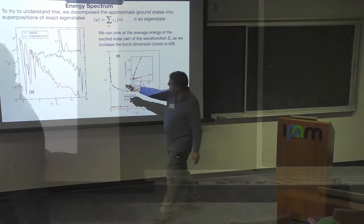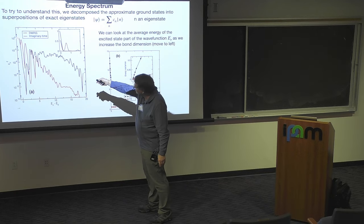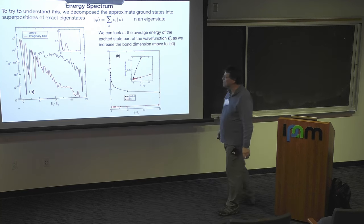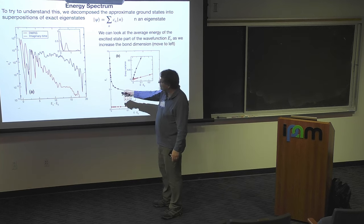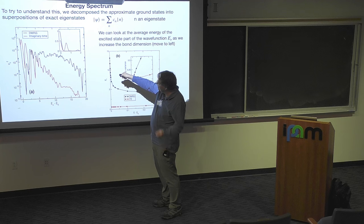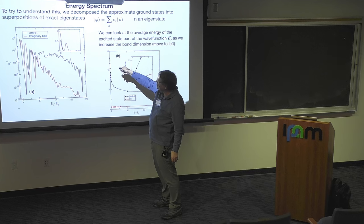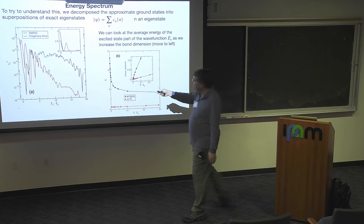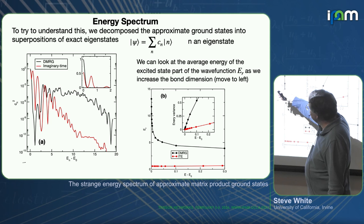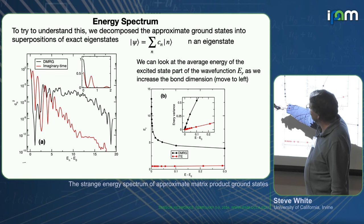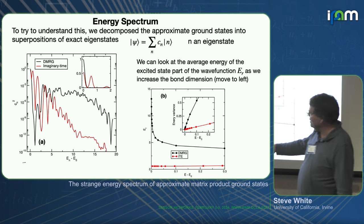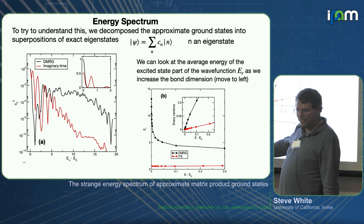For imaginary time evolution, you see contributions of states that drop off roughly exponentially, as you'd expect. But for DMRG, on the log scale we can see that the actual ground state has very large weight — 0.99 something — and then everyone else is at a tiny level, like 10 to the minus 4, going to energies that are much bigger than we usually expect for a system like this. The energy distribution is just much broader than we've come to expect.